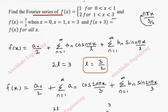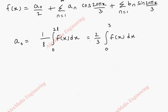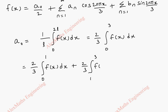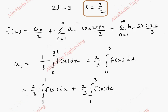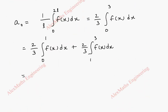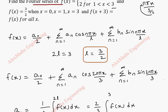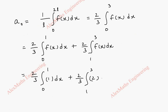But this f(x) is made up of 2 parts: from 0 to 1 it is 1, and from 1 to 3 it is 2. So we are going to write this as 2 parts: 2/3 · integral from 0 to 1 of f(x) dx, plus 2/3 · integral from 1 to 3 of f(x) dx. The function values are 1 and 2 respectively, so it becomes 2/3 · integral from 0 to 1 of 1 dx, plus 2/3 · integral from 1 to 3 of 2 dx.